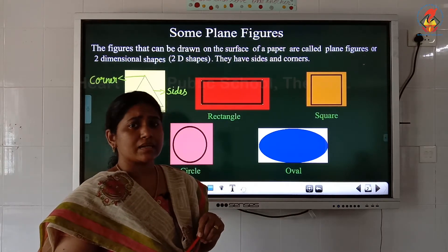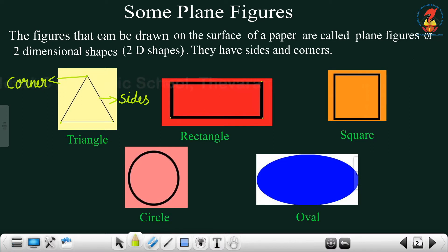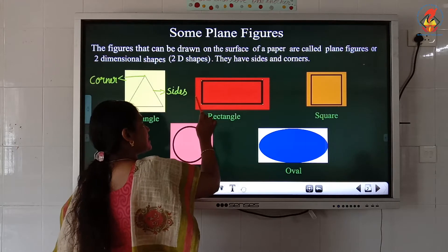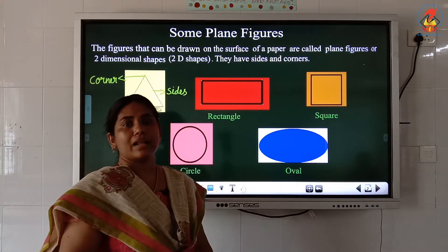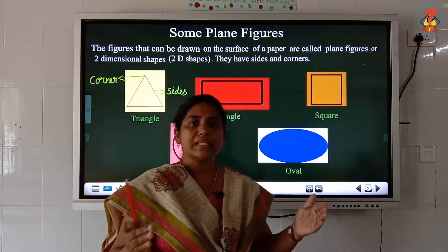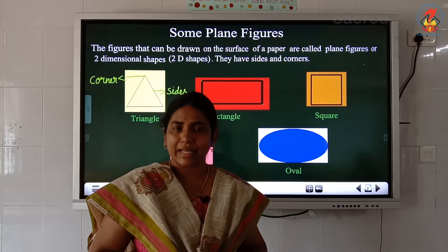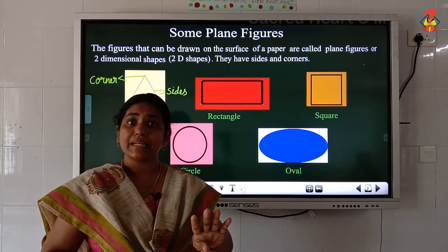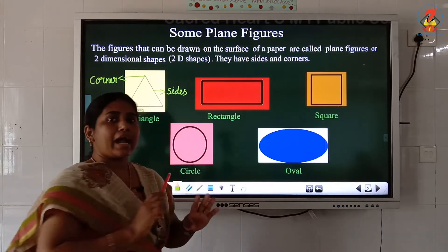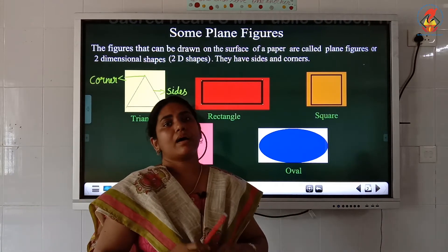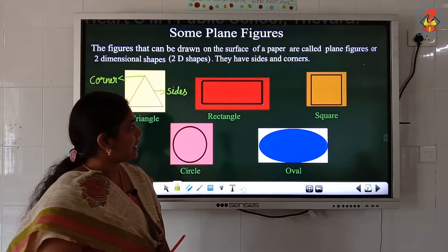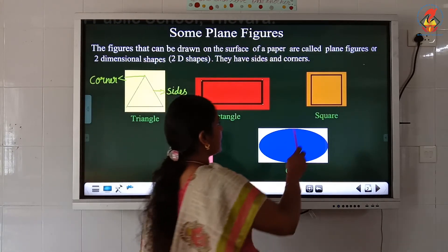Look at the sides of the rectangle — something special: the opposite sides of a rectangle are equal. The top side and bottom side are equal, and the left side and right side are equal. So a rectangle has four sides, four corners, and opposite sides are equal.